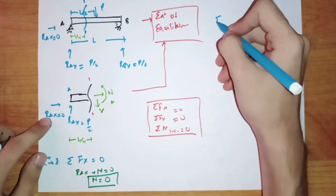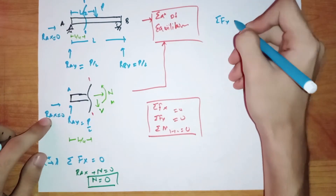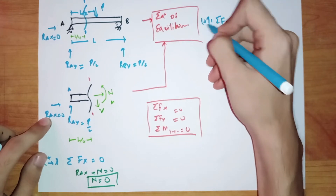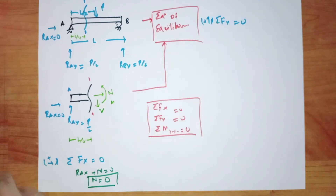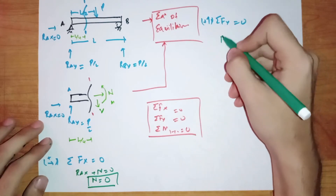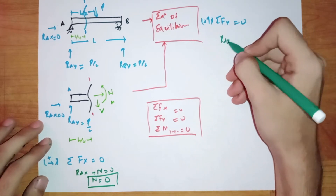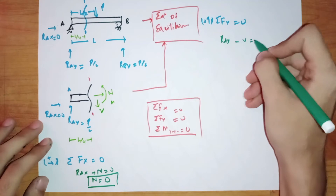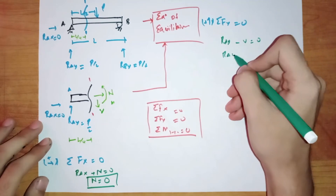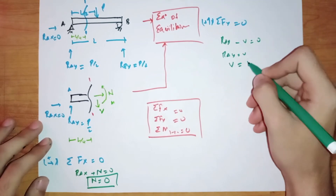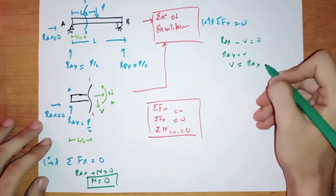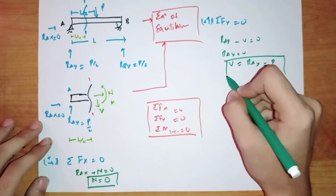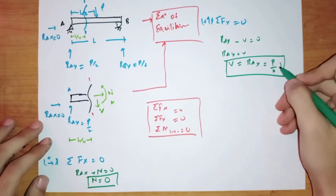Applying the second equation of equilibrium, summation of Fy equal to 0, and taking upward forces as positive. We have RAY acting in the upward direction, so positive, and V acting in the downward direction. So RAY equals V, therefore V equals RAY equals P over 2, acting in the downward direction.